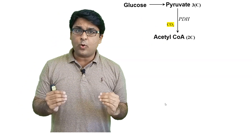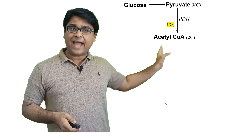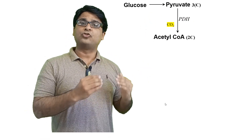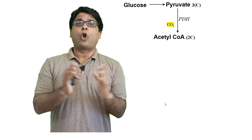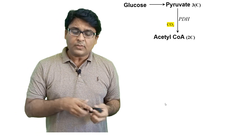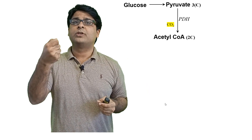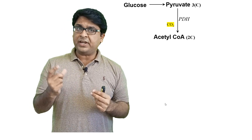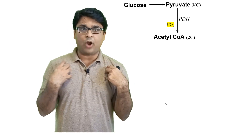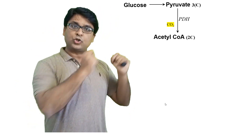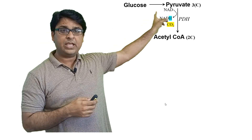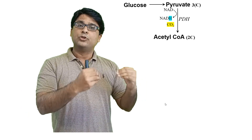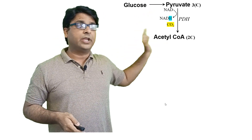When pyruvate is converted into acetyl-CoA, a carbon dioxide molecule is released and this reaction is catalyzed by an enzyme known as pyruvate dehydrogenase (PDH). Whenever there is a dehydrogenase in the metabolic pathway, it is plucking out high energy electrons and putting them on either NAD or FAD — these are carrier molecules. In this case, NAD is converted into NADH as the high energy electron is transferred to it.